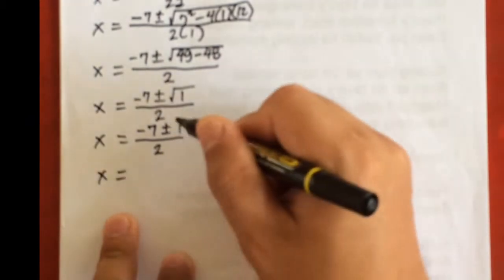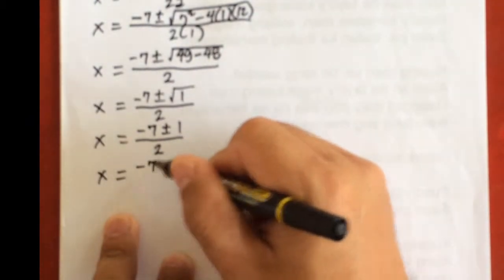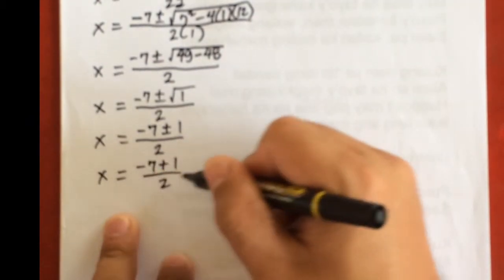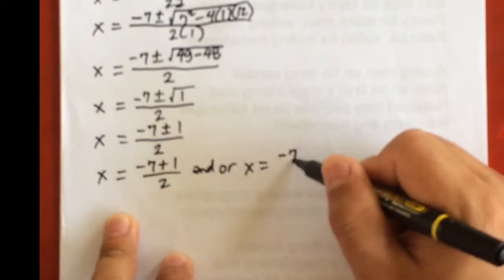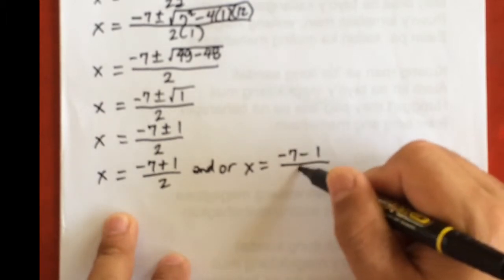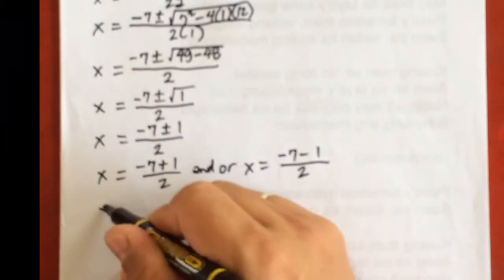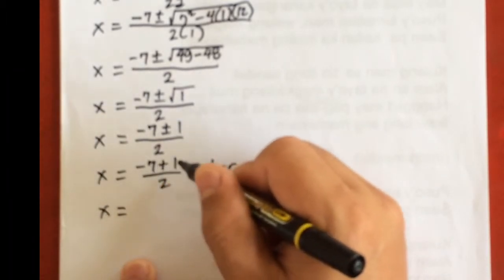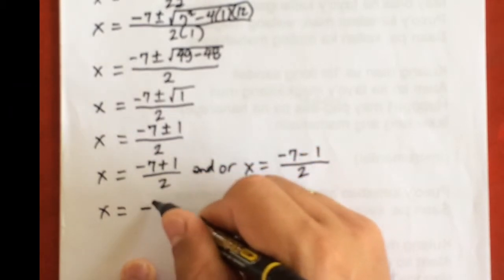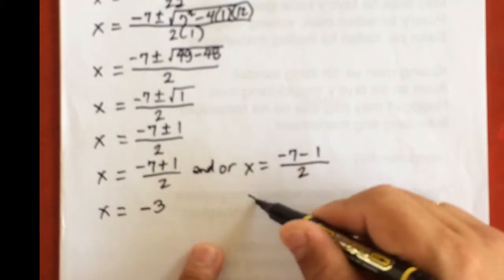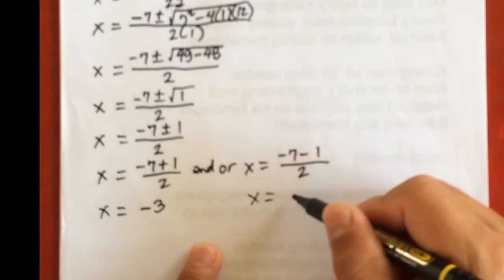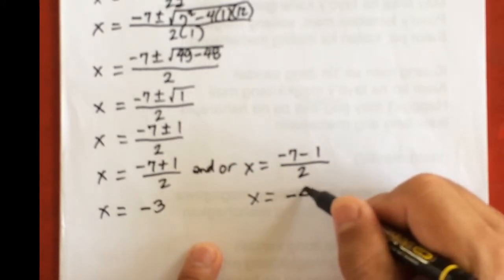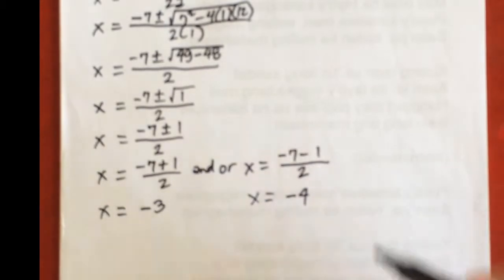So x will have 2 values: x equals negative 7 plus 1 over 2, and x equals negative 7 minus 1 over 2. Negative 7 plus 1 is negative 6 divided by 2, giving negative 3. And negative 7 minus 1 is negative 8 divided by 2, giving negative 4. So the answers are negative 3 and negative 4.